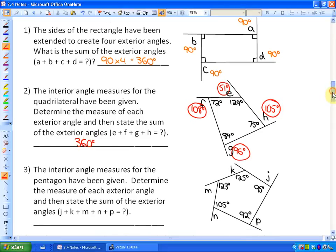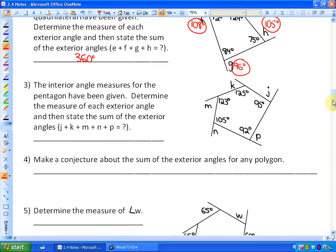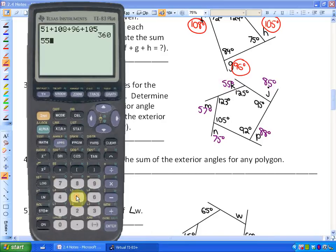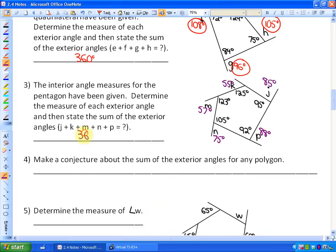Let's look at a pentagon. So a pentagon, we learned from the last activity, would create three triangles inside of it. So these angles, interior angles, would add up to 540 degrees. And you can check that. I'm not going to. What this says is the interior angle measures are given. Determine the measure of each exterior angle. So I will do that rather quickly, which you should have already done. So this should be 55 degrees, 57 degrees, 75 degrees, 88 degrees, and 85 degrees. So if I add up all of those exterior angles, let's see what I get. 55 plus 57 plus 75 plus 88 plus 85, I get 360 degrees again. It's kind of interesting.